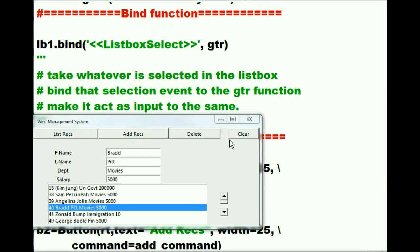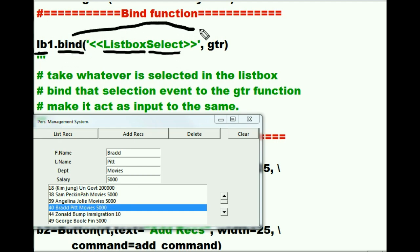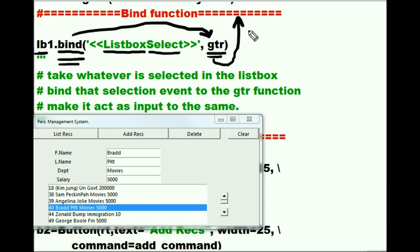Before I can talk about any more of the buttons here, I have to talk about this one line of code. I'm telling Mr. ListBox: whenever anybody selects any record in your list box, I want you to bind that selection to this function, GTR, which I have defined up there. So this selection triggers this binding event, and the binding event binds the selection to this function and triggers its execution.